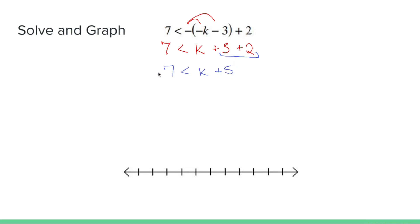On the left side, we have seven, so seven is less than k plus five. Subtract five. Two is less than k.